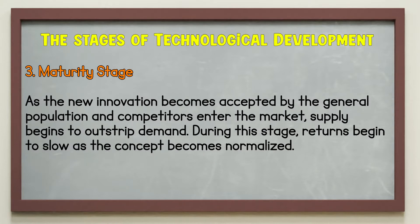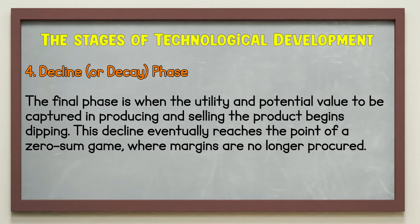The maturity stage: as the new innovation becomes accepted by the general population and competitors enter the market, supply begins to outstrip demand. During this stage, returns begin to slow and the concept becomes normalized. The decline or decay phase is the final phase, when the utility and potential value to be captured in producing and selling the product begins dipping. This decline eventually reaches the point of a zero-sum game where margins are no longer procured.